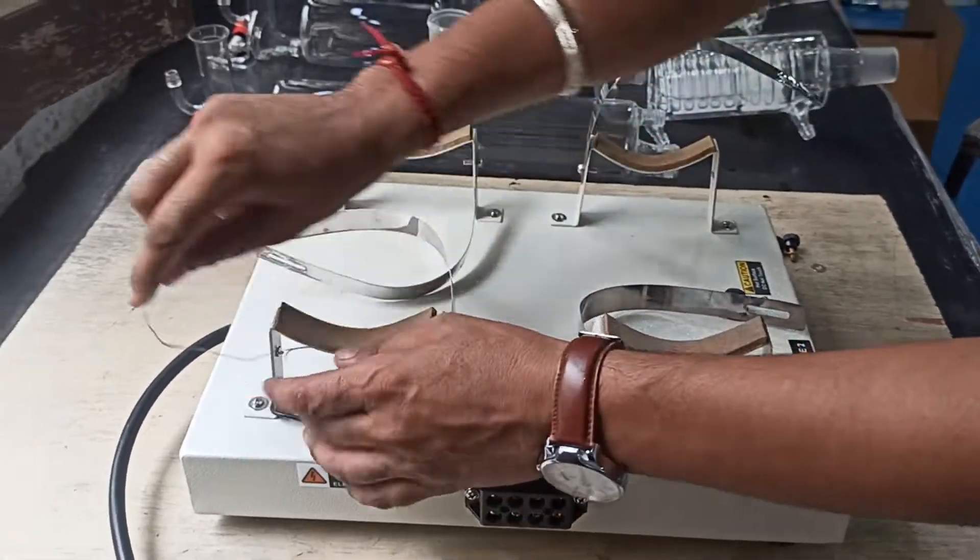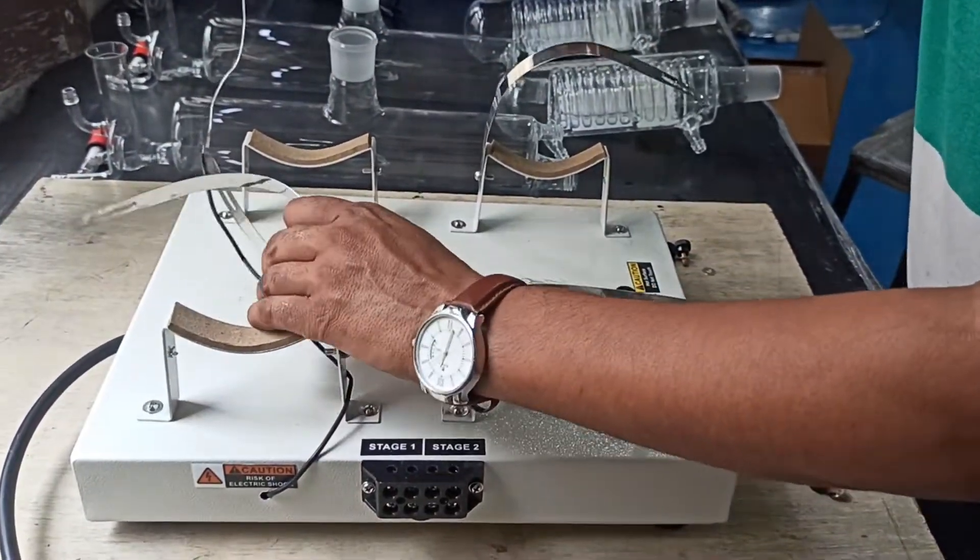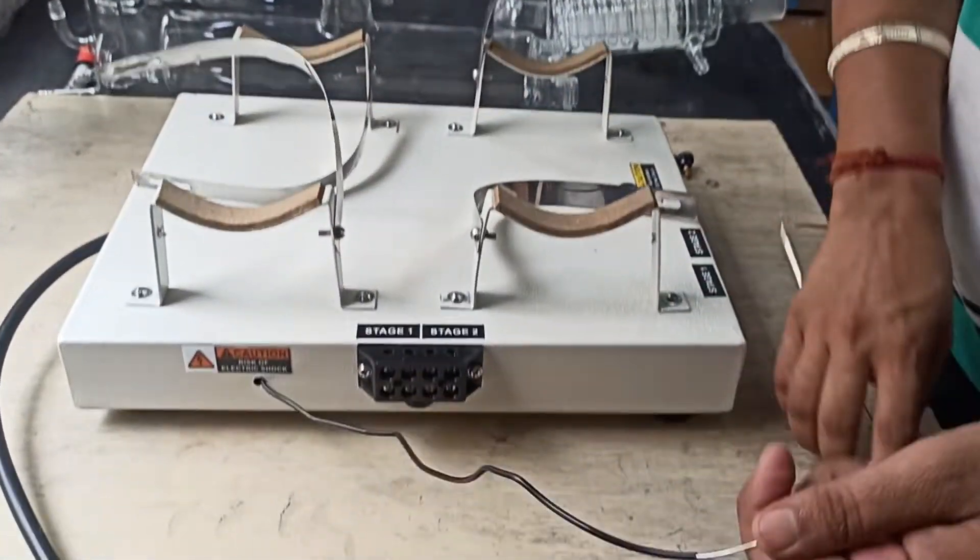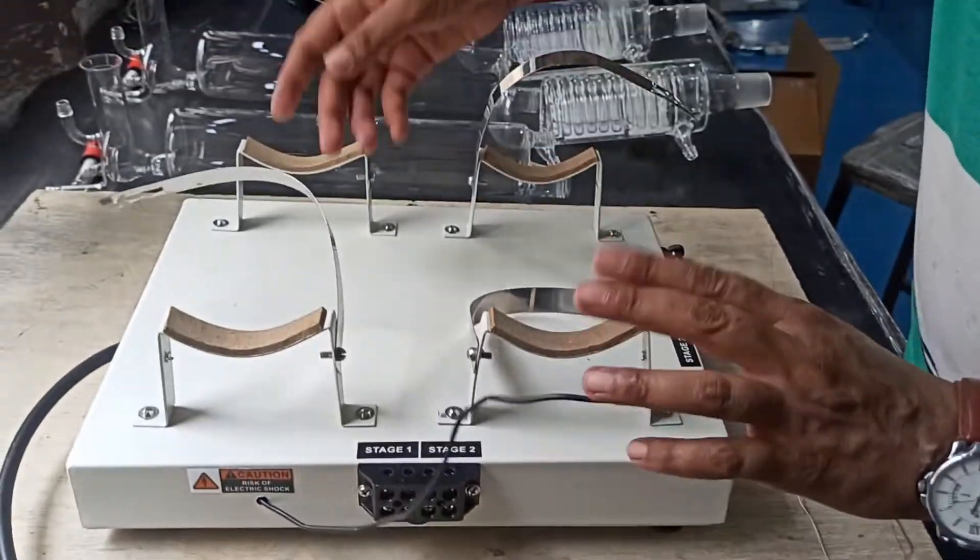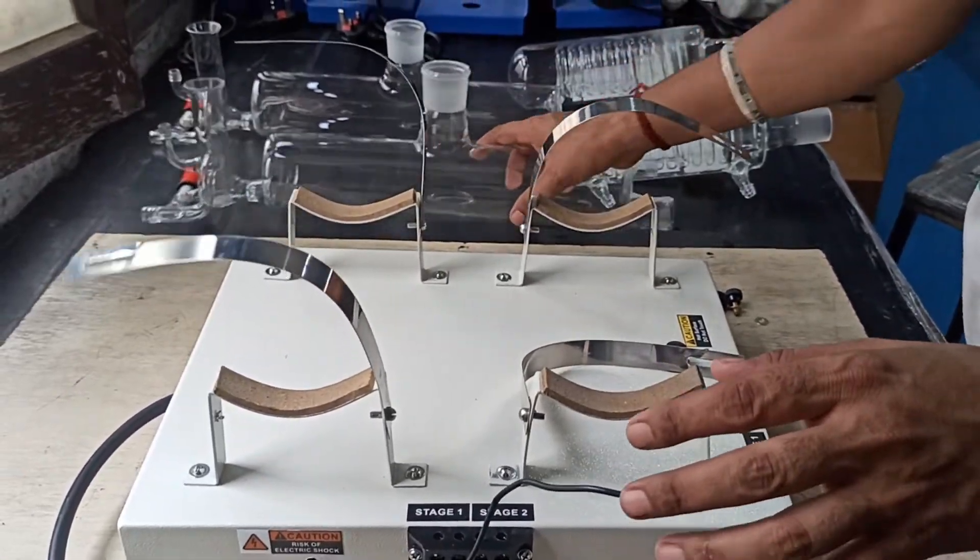Firstly, place the powder coated stand with clamps at a suitable location. Open the black headed knob screw from the boiler clamp and place the first stage boiler carefully.